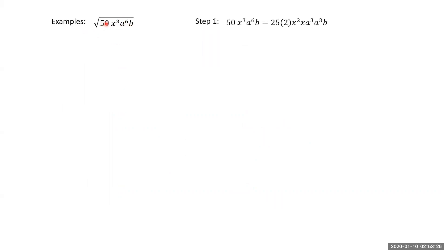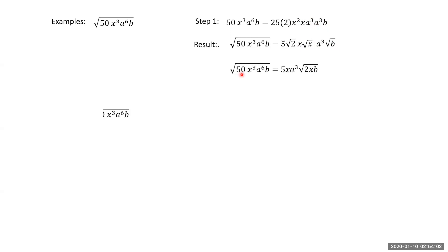Now a more complex problem — but the method is the same. For root of 50 x³ a⁶ b: first, split 50 into its largest perfect square factor — 50 ÷ 2 gives 25 × 2, so 25 is the perfect square. Then x³ = x² × x, so x² is the perfect square part. a⁶ is already a perfect square. b has no perfect square factor. The roots are: root of 25 = 5, root of x² = x, root of a⁶ = a³, and root b is the leftover.